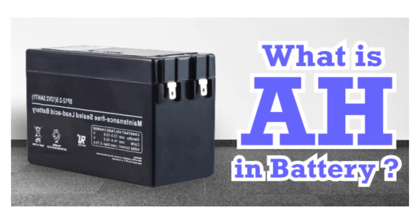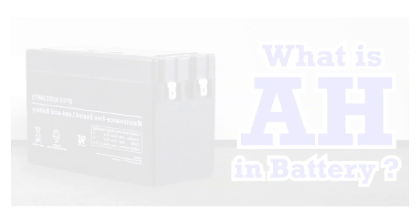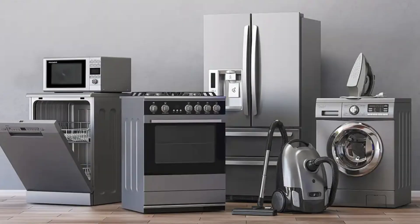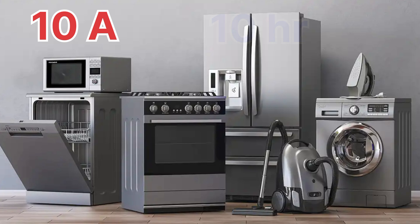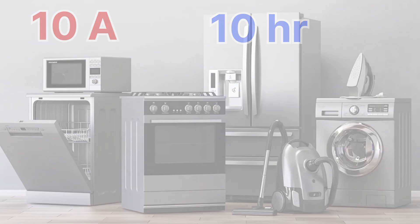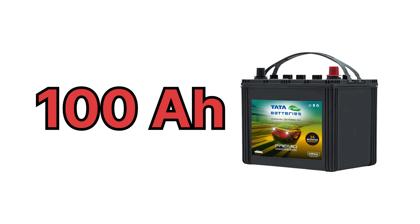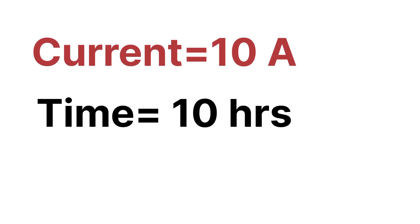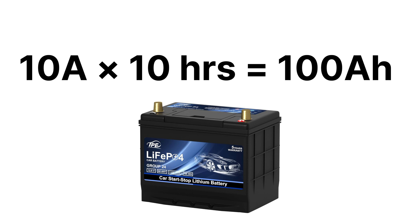To know more in detail about AH, let's take an example. Suppose there is a 10 ampere load available in our home and we want to run that 10 ampere load for 10 hours. Then we must buy a battery of 100 AH, because the current is 10 ampere and the time period is 10 hours, so multiplying 10 ampere by 10 hours gives us 100 AH.